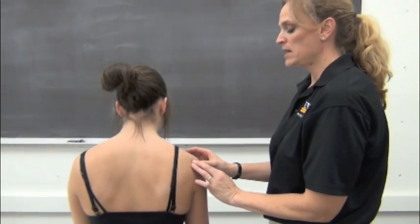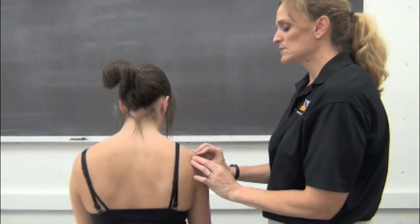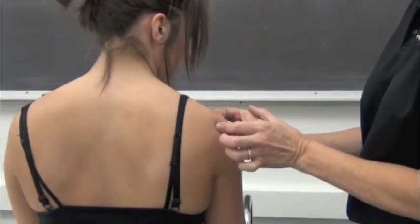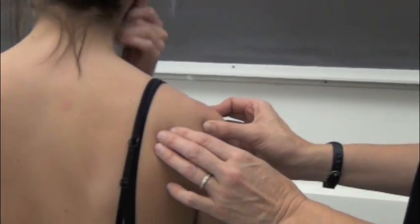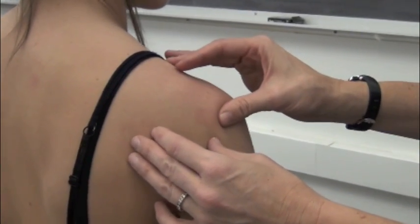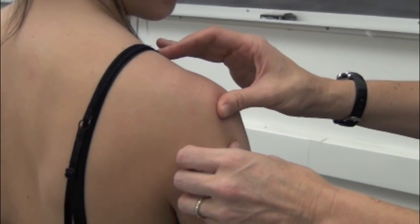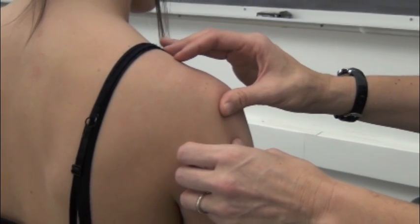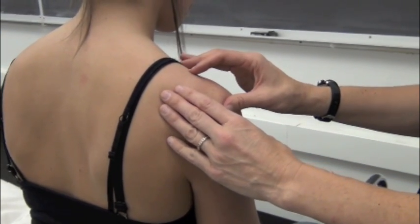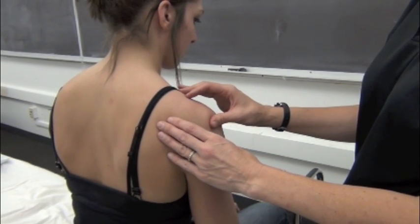We've palpated the acromial angle from the posterior aspect and moved laterally. Now palpate anteriorly until you've gotten to the anterior aspect of the acromion, and appreciate the width of the acromion. From the lateral border of the acromion, step down — the acromion is above and the humeral head is below. This is the subacromial space, where you'll find the subacromial bursa. We're palpating for reproduction of symptoms and potentially increased fluid if the patient has a bursitis in that region.